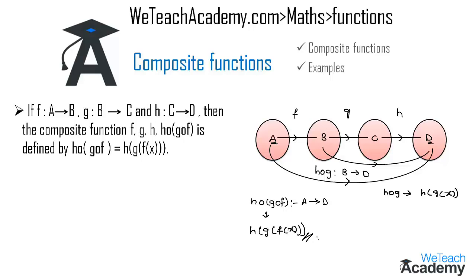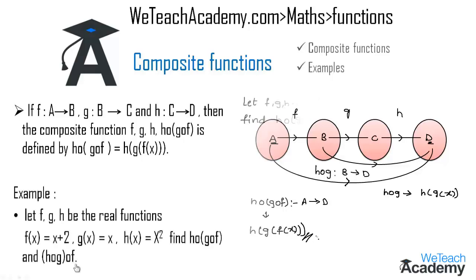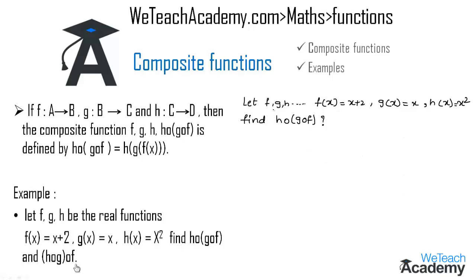Let me explain with an example. Let f, g, and h be real functions where f(x) = x + 2, g(x) = √x, and h(x) = x². We need to find h∘g∘f. The composite function h∘g∘f can be defined by h(g(f(x))).